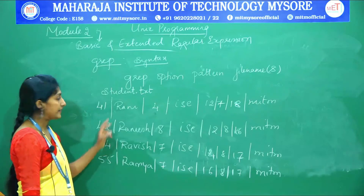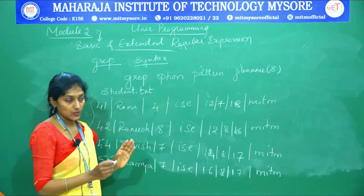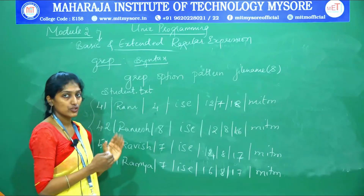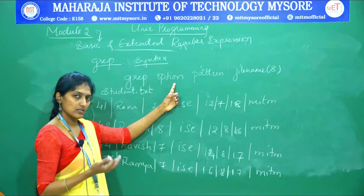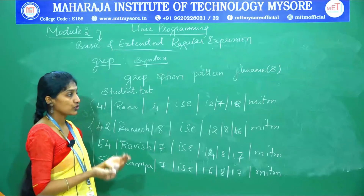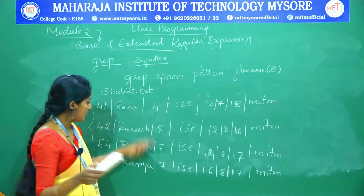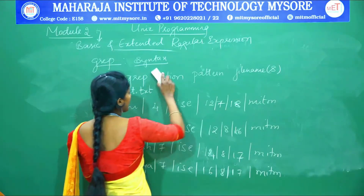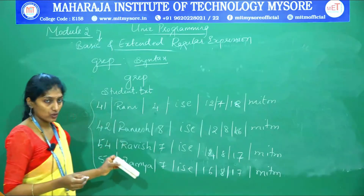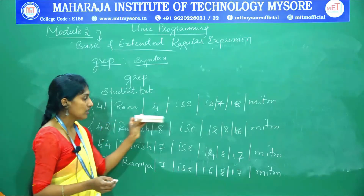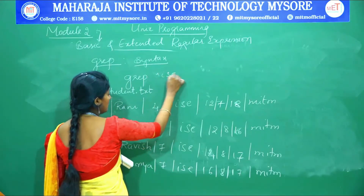The student.txt file contains student records. To search for a pattern from this file, use the grep command. For example, searching for the pattern 'ISE' without any option: grep "ISE" student.txt. The shell scans this input, identifies the grep command's purpose as searching for pattern ISE from student.txt, and displays all lines containing that pattern.